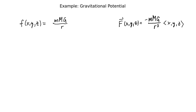In this example, we're asked to show that this given function f of x, y, z equals mMG over r is a potential function for the gravitational vector field. And I've written here the gravitational vector field that we studied in the last section, just so that we can remember what that is.